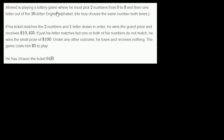Ameth is playing a lottery game where he must pick two numbers from zero to nine and then one letter out of the 26-letter English alphabet. He may choose the same number both times. If his ticket matches the two numbers and one letter drawn in order, he wins the grand prize and receives $10,405.